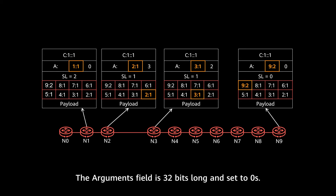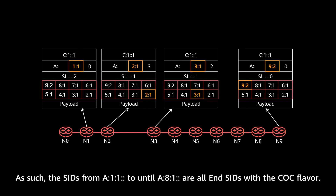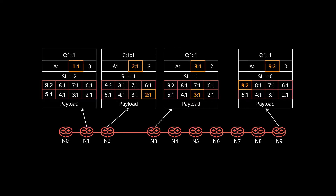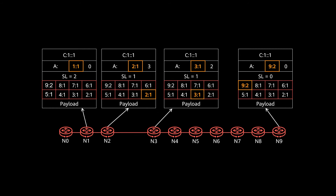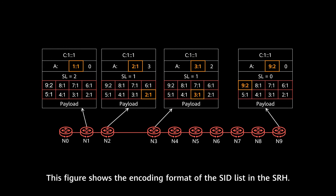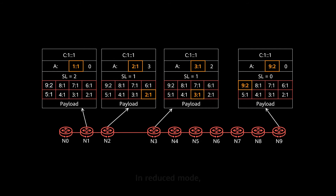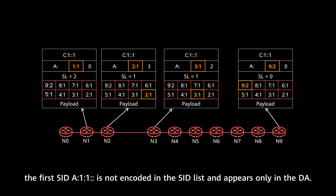The argument field is 32-bit long and all set to zero. The SIDs from 8::1:1:: through 8::8:1:: are all End SIDs with COC flavors, and 8::9:2 is a normal SRV6 End SID without the COC flavor. This figure shows the encoding format of the COC SIDs in the SRH. In reduced mode, the first SID 8::1:1 is not encoded in the SRH, and it will appear only in the DA. Therefore, the SL field is set to 2 and the SI field set to 0.